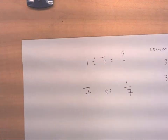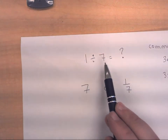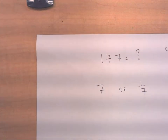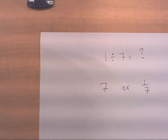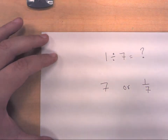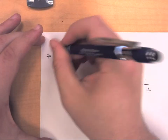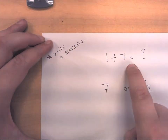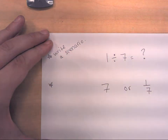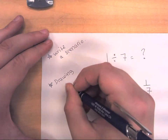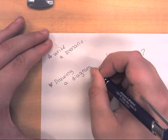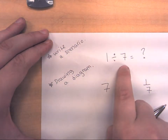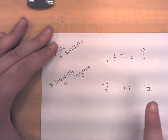What's going on with one divided by seven is we have one whole and we're dividing it into seven equal parts, asking how big one of those parts is. We used two strategies to figure that out: writing a scenario — attaching a situation to the division problem — and drawing a diagram. Together, these helped us conclude pretty conclusively that one divided by seven does equal one-seventh.